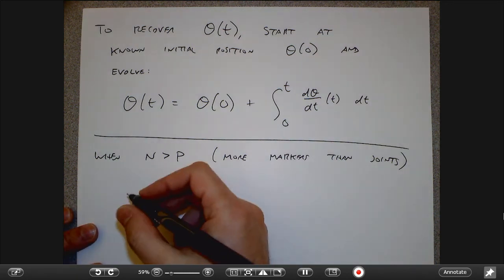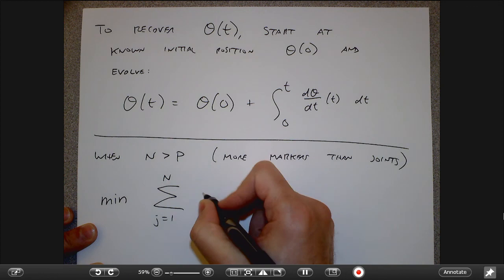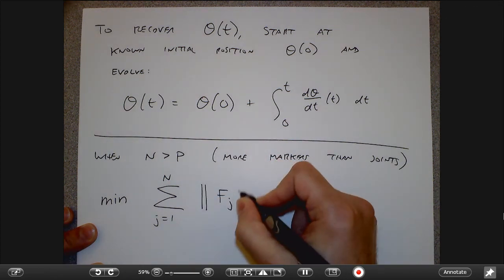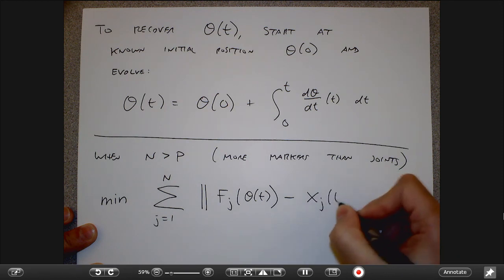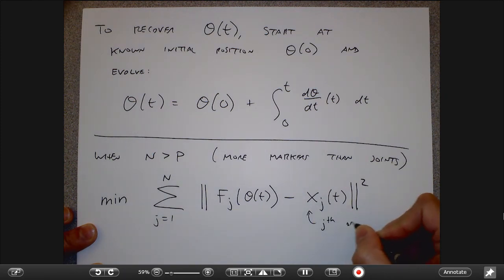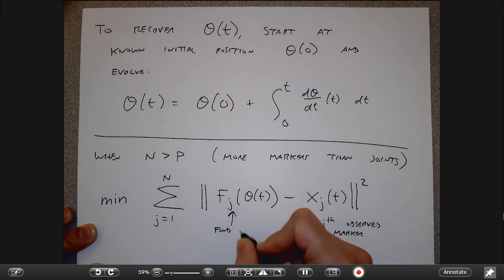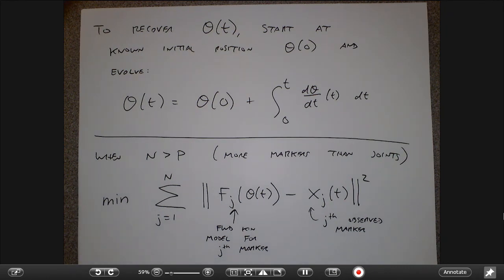In the over-constrained case, I minimize a cost function: the sum over all observed 3D markers of the distance between the observed marker position and the forward kinematic model prediction for that marker. I want to make those as close together as possible, knowing I may not be able to exactly nail down all the observed markers due to noise.